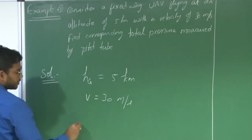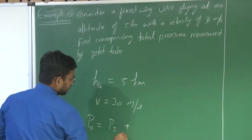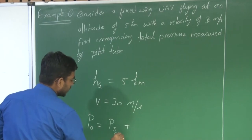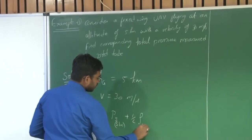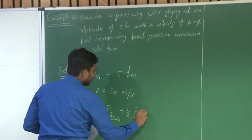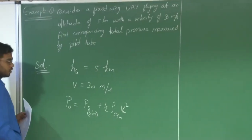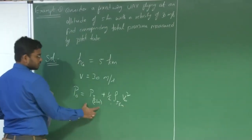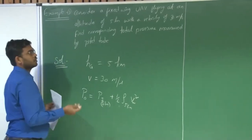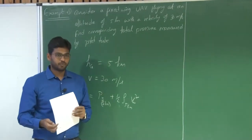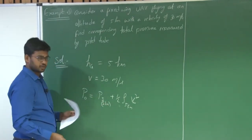So how do we find the total pressure? The static pressure P_s at 5 kilometers plus half times density at 5 kilometers times velocity squared gives total pressure. The dynamic pressure part is half rho v squared and the static pressure is P_s. At 5 kilometers, the aircraft is flying in the gradient layer, so we need to find the corresponding static pressure at 5 kilometers using gradient layer equations.